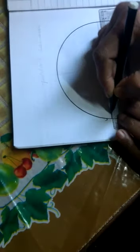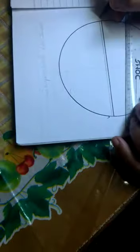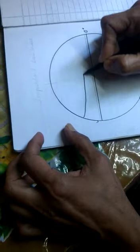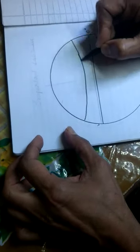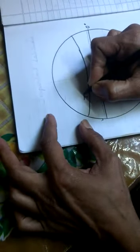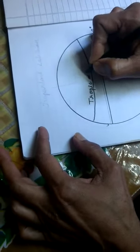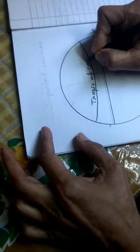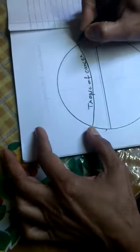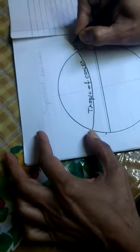It is 0 degree. Then it is Tropic of Cancer. It is 23 and half degree north.